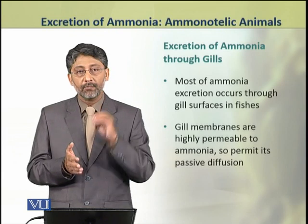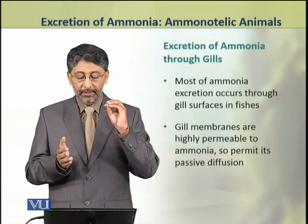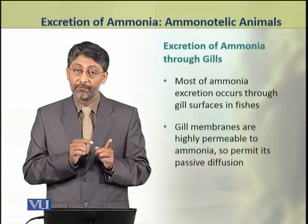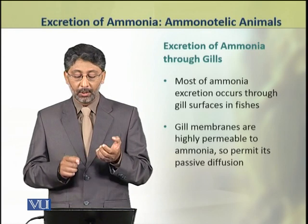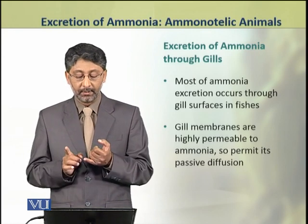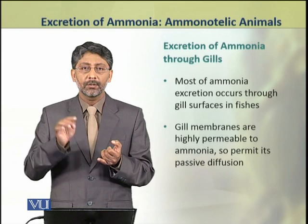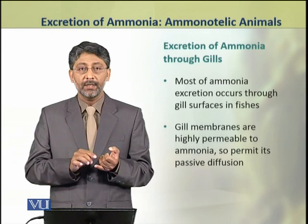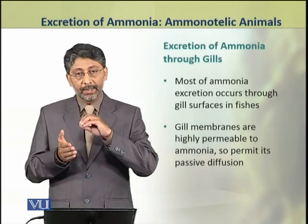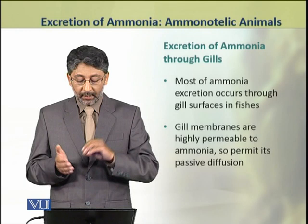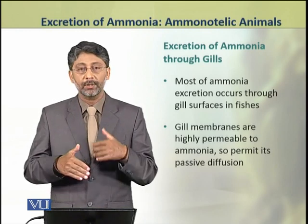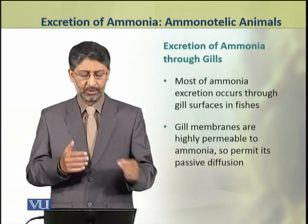Now we shall discuss the excretion of ammonia through the gills of fishes. Most of the ammonia in fishes is excreted across the gill surfaces. The gill membranes are highly permeable to ammonia, so they permit diffusive excretion.